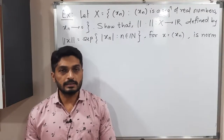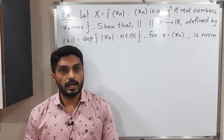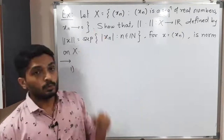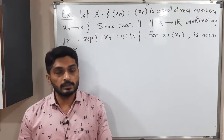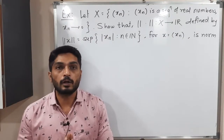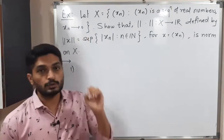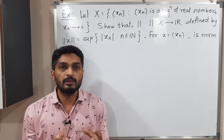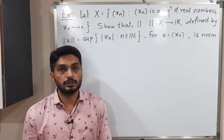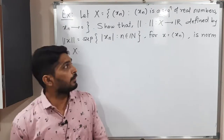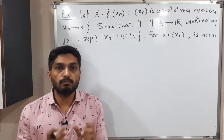Let us discuss this example. We have capital X, which is a collection of all real-valued sequences converging to zero — Xn converges to zero. They have defined the norm as the supremum of |Xn|, that is, you take the mod of each term and the supremum of all those values is the norm.